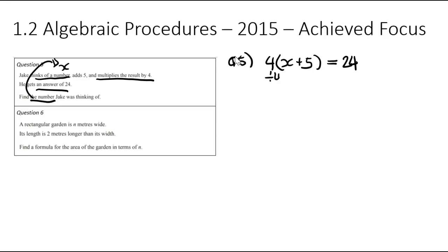I'm going to start by going divide by 4, divide by 4. You could have expanded the brackets if you want, but I chose not to. So we've got x + 5 = 6 there. I'm now going to go minus 5, minus 5. x is equal to 1. And if you think about it, that makes sense. He thinks of a number, adds 5. 1 plus 5 gets me to 6. He then times it by 4, and that's going to get me to 24. And that was the number he was thinking of.